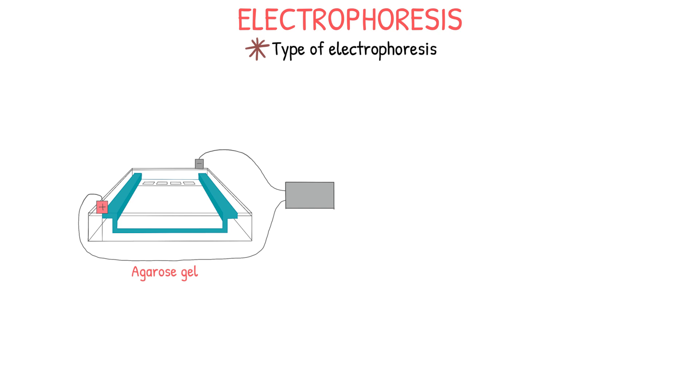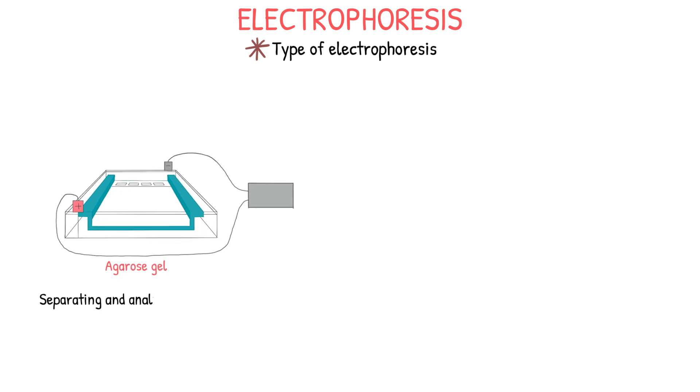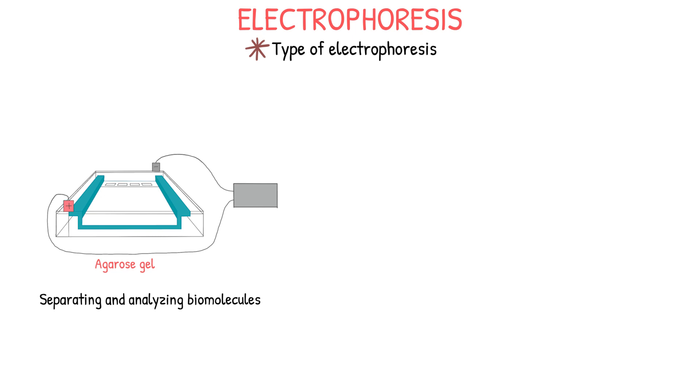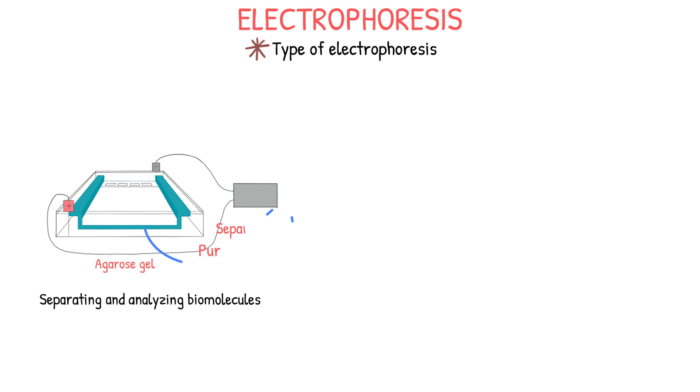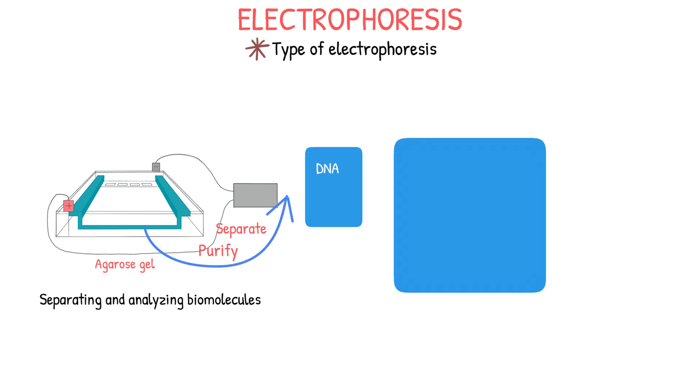Agarose gel electrophoresis is a method for separating and analyzing biomolecules. It involves heating a solution of agarose, adding appropriate buffers and electrophoresis samples before the agarose solidifies, and then subjecting the sample to an electric field, causing it to move towards the anode, thus separating and purifying biomolecules such as DNA, RNA, and proteins. Agarose gel electrophoresis is a simple, fast, low-cost, and efficient technique for biological analysis.